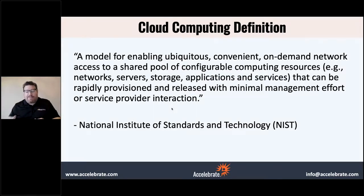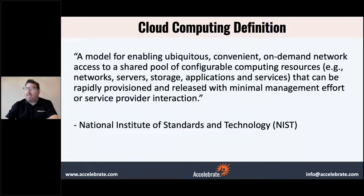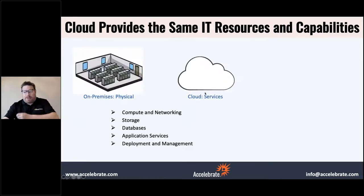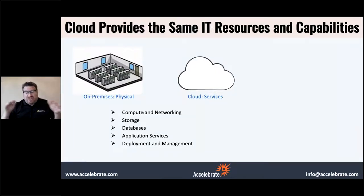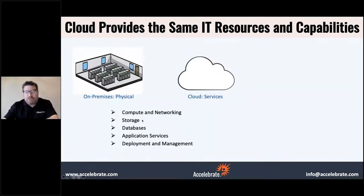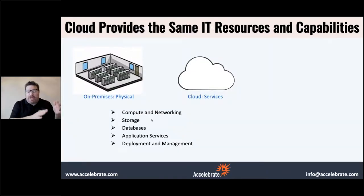I'll launch either a Linux or a Windows machine. If it's Windows, I can remote desktop into it, but nobody at Amazon can. If it's Linux, I can SSH into it. The configurable computing resources include virtual machines for compute, and basically anything you can think of in an on-premises data center has an equivalent in the cloud. We're not going to have physical servers, but we'll have virtual machines. We'll have software-defined networking instead of physical switches and routers, and we've got all kinds of storage, databases, and application services.